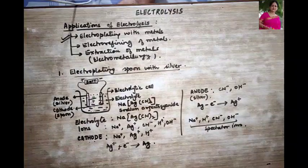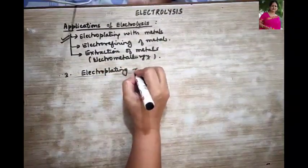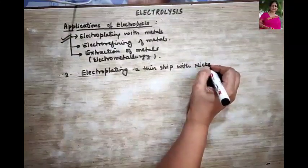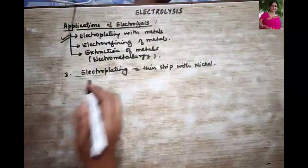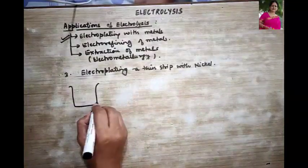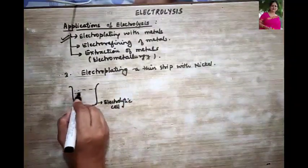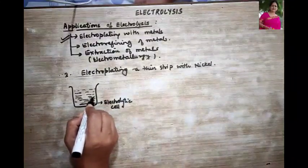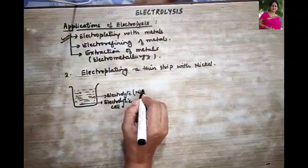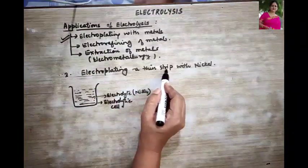The second example is electroplating a thin strip with nickel. First, draw the diagram. This is your electrolytic cell with the electrolyte. The electrolyte should contain nickel, so we take nickel sulfate. We need the electrodes: the thin strip is the article to be electroplated, so that should be your cathode.